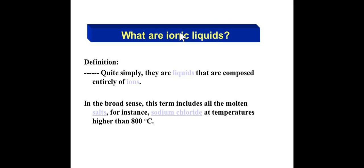The definition of ionic liquids is simply they are liquids that are composed entirely of ions. In the broader sense, this term includes all the molten salts. For instance, if we take sodium chloride NaCl at temperatures higher than 800 degrees, it will be in liquid form. That will be said as ionic liquid.